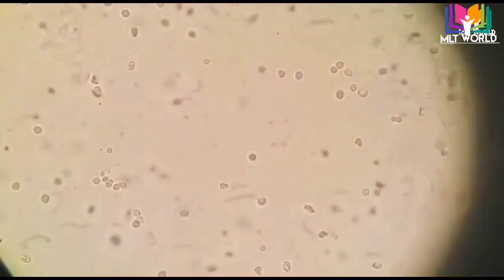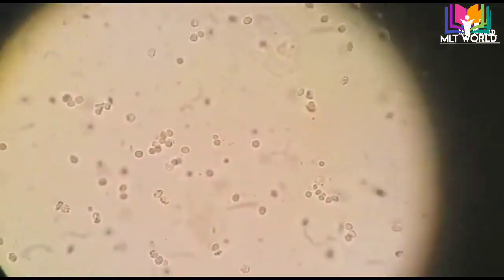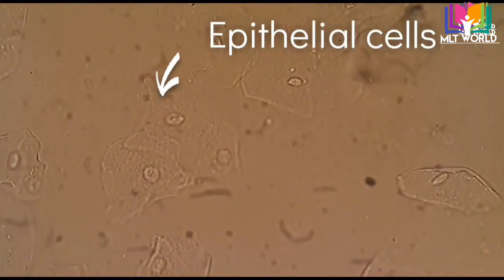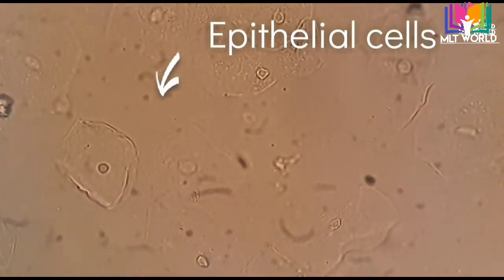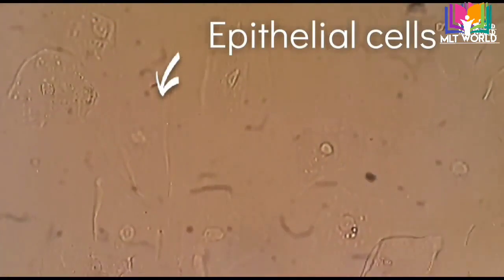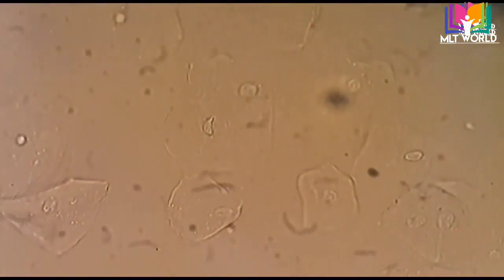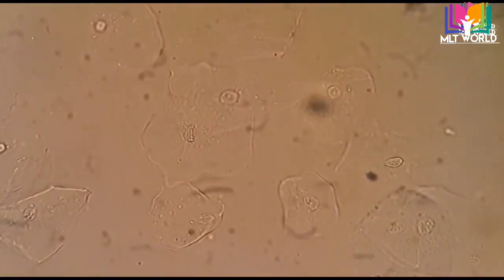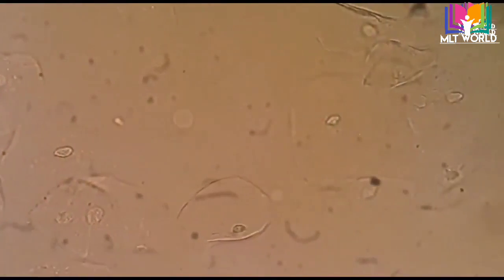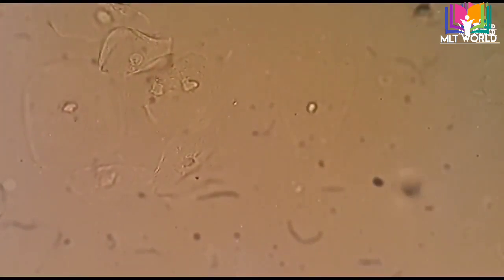The most common findings in urinary microscopy are pus cells, red cells, and epithelial cells. After that we look for casts, crystals, fungi, and yeast cells. Epithelial cells come in different types — squamous and transitional. They are larger than red cells and pus cells; some are oval, some round, some irregular, with one nucleus in the center. Epithelial cells are more commonly seen in females than males, and a high number may indicate fungal infection.